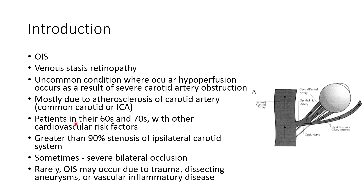It usually occurs in patients in their 60s and 70s with other cardiovascular risk factors. There can be greater than 90% stenosis of the ipsilateral carotid system. Sometimes there can be severe bilateral occlusion. Rarely, ocular ischemic syndrome may occur due to trauma, dissecting aneurysms, or vascular inflammatory disease.